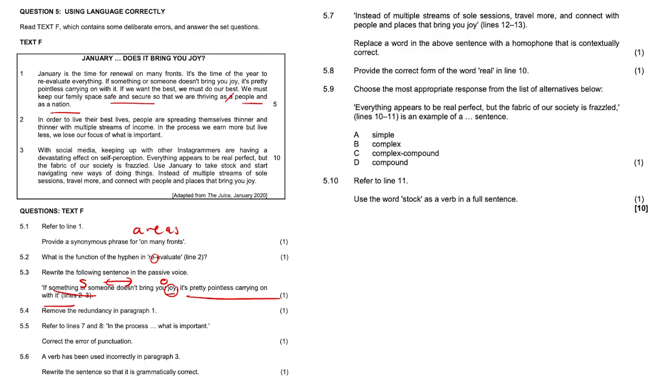5.5, refer to lines seven and eight. In the process all the way to what is important, correct the error of punctuation. So the error of punctuation is there. In the process, we earn more but live less. We lose our focus of what's important. So maybe a full stop here and capitalize the W. That's what I'm thinking because these are two completely separate ideas, so they deserve two sentences. Alternatively, you can use a semicolon because that also separates different ideas.